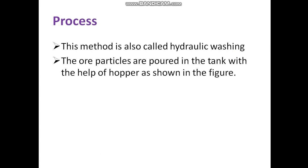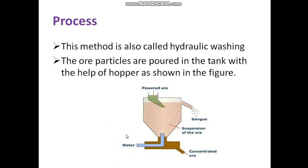This method is also called hydraulic washing, as we are washing with a current of water. The ore particles are poured into the tank with the help of a hopper, as shown in the figure. This is a tank of water; from the hopper we pass the powdered ore, and this is the water jet from where we pass the water.